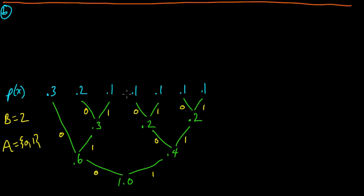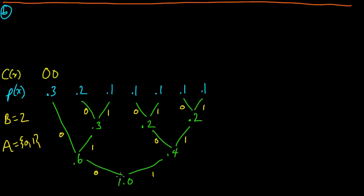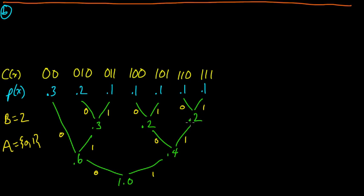Later we'll look at how to extend Huffman to the more general case. Now let's compute the code words. We start at the root: for the 0.3 node, the path from the root is zero-zero, so its code word is 00. Then 0.2 is 010, the first 0.1 is 0110, then 01100, 01101, 0111, 100, 1010, 1011, 110, 1110, and 1111.